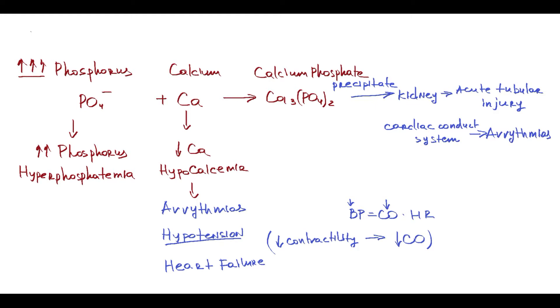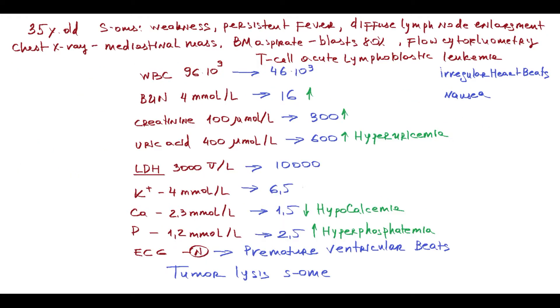Another intracellular ion is potassium, so there is massive release of potassium to the blood. With increased potassium level, there is also increased risk for arrhythmias. Hyperkalemia develops, and on ECG we see that there are premature ventricular beats, primarily due to electrolyte changes.